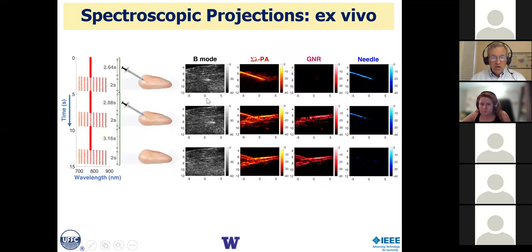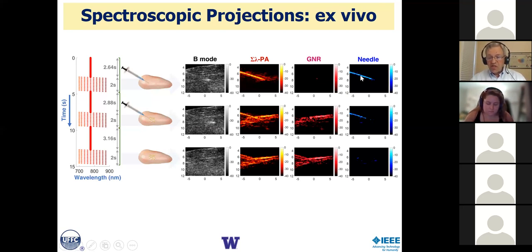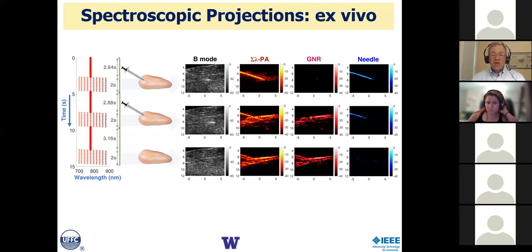Here's the ultrasound picture, the raw photoacoustics, and then these spectroscopic projections at three different time points during the delivery sequence. GNR — gold nanorods — is our particular contrast agent. We make pictures of the contrast agent and specifically the needle. Before injecting, you only see the needle. As we inject, we see both agent and needle. When we remove the needle, we just see the contrast agent. This is the simplest form of spectroscopic separation, done in real time, removing two major impediments to clinical use: motion artifacts and wavelength-dependent fluence variations.